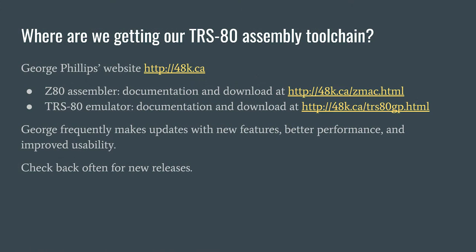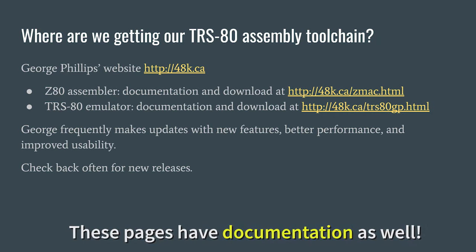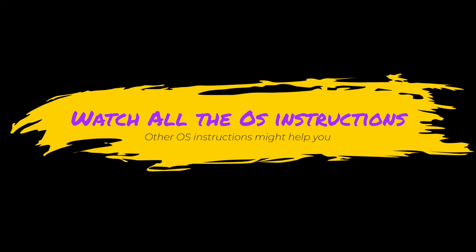This video is going to hone in on just getting the toolchain installed. We're not going to build any assembly language or use the tools at all — we're just going to get them going. I'll step you through Windows first, then Linux, then the Macintosh. Hopefully it'll help rather than a simple list of instructions, so you can see the issues that might come up and overcome them. The software is from George Phillips' website at 48k.ca. Check back for new releases and maybe bookmark those links. I suggest you watch all the OS instructions, as the other OS's might help you understand problems you run into on yours.